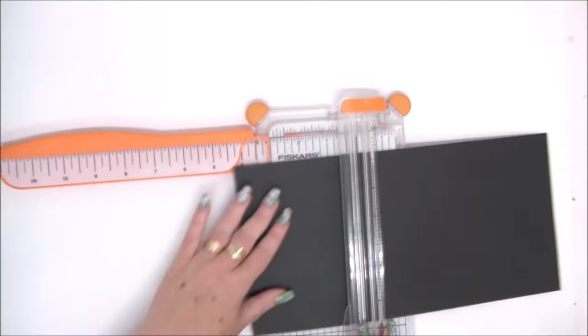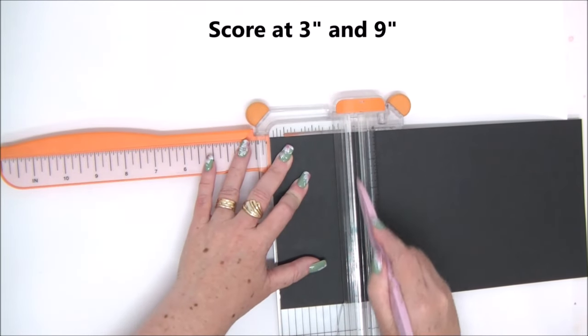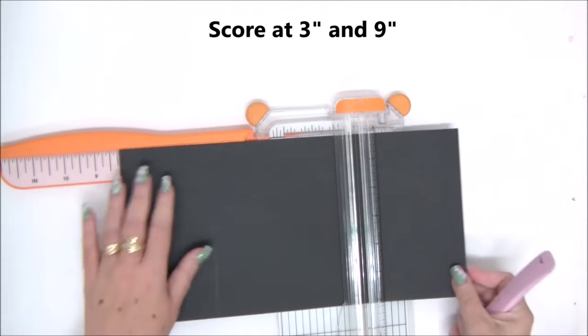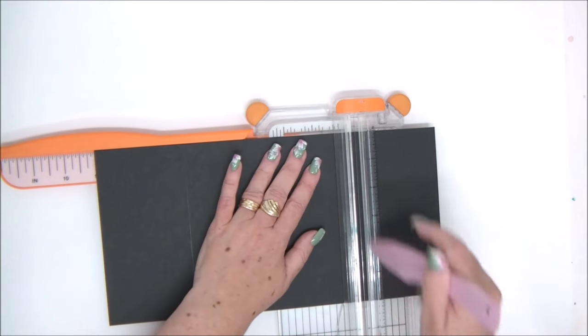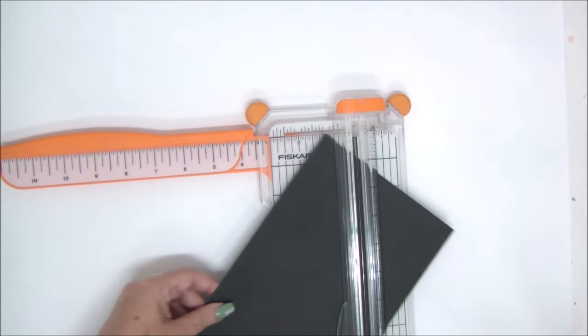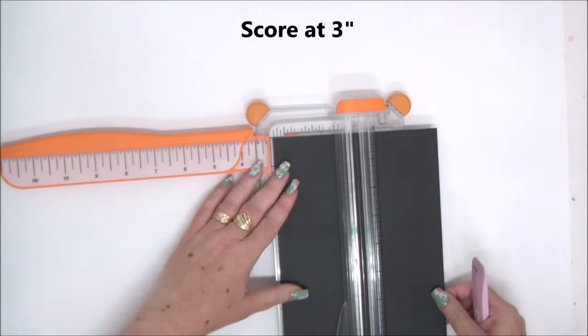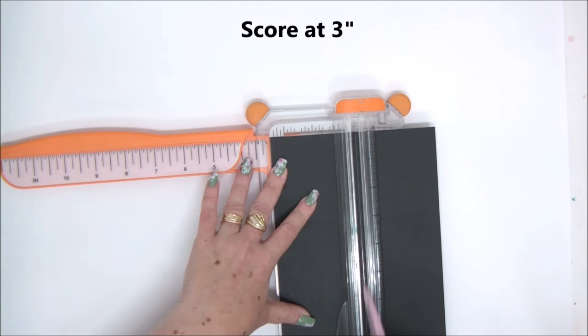Let's see how. We're going to start on the long side and score it at 3 and at 9. Then we are going to turn our cardstock and score it at 3 inches.